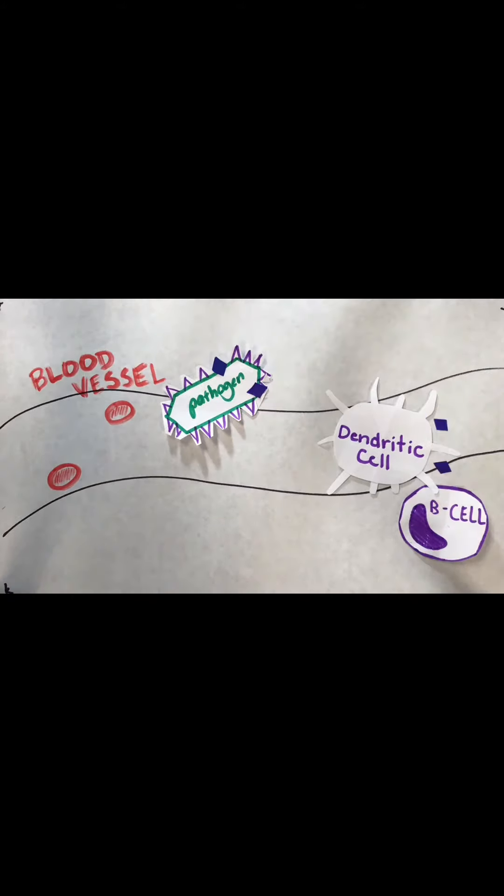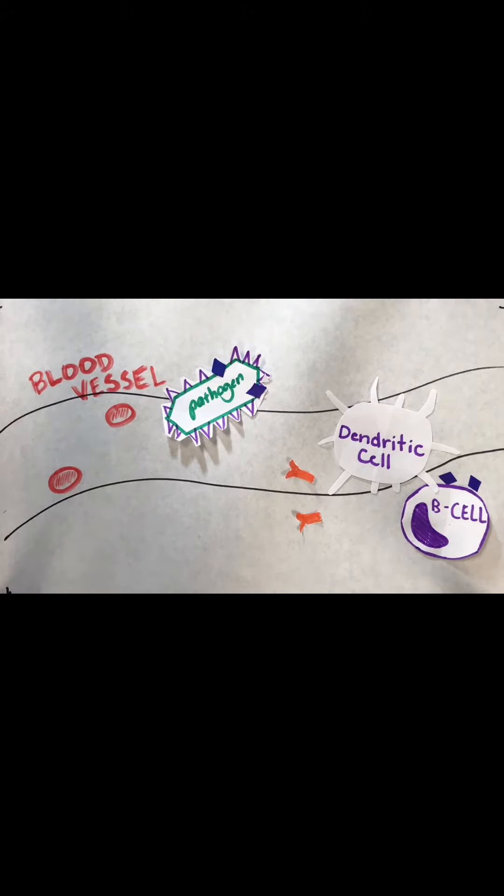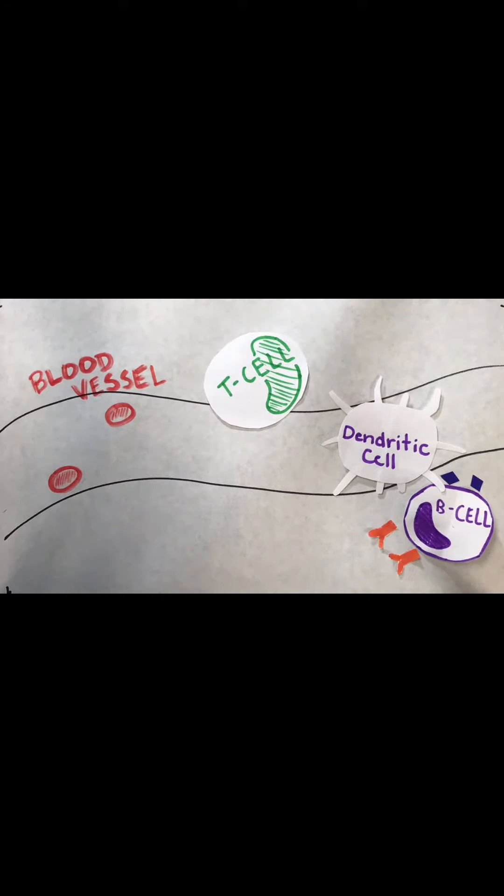and communicate to a B cell that the antigens are present. The B cell will create antibodies that are specific to the type of pathogen and triggers the T cell to come in and remove that specific pathogen.